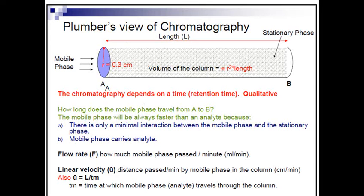Here we have a plumber's view of chromatography. Chromatography means one stationary phase — which doesn't have to be solid, but has to be stationary — one mobile phase, and one analyte, and they all run through a column. In this case, the assumption is that the mobile phase will always be faster than the analyte.